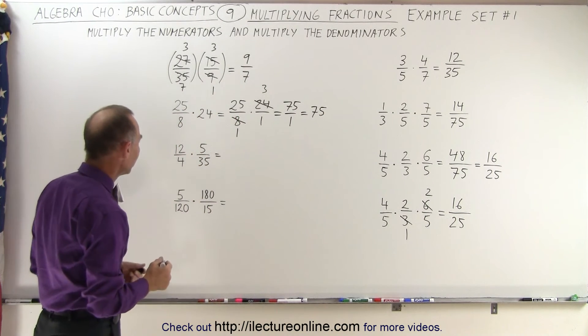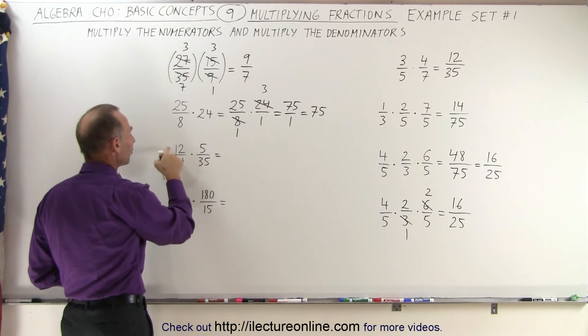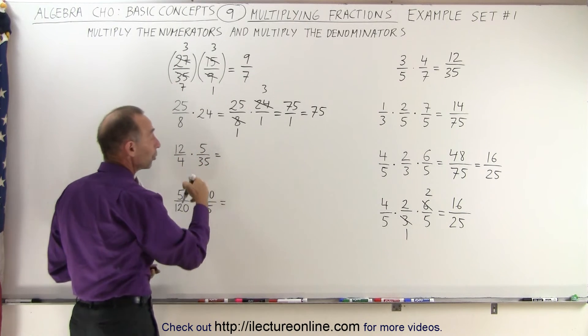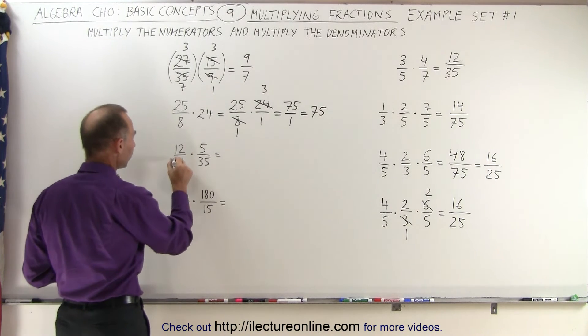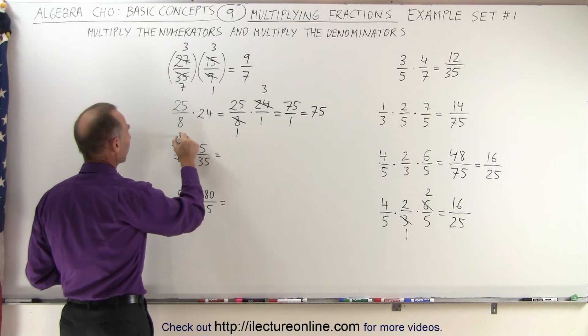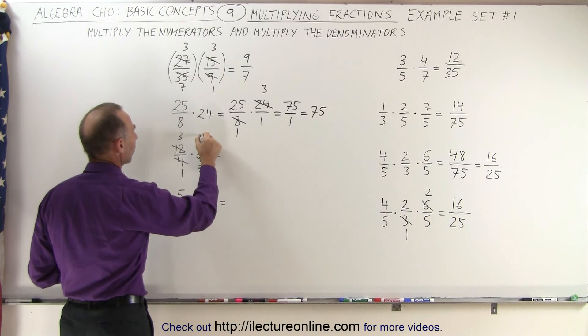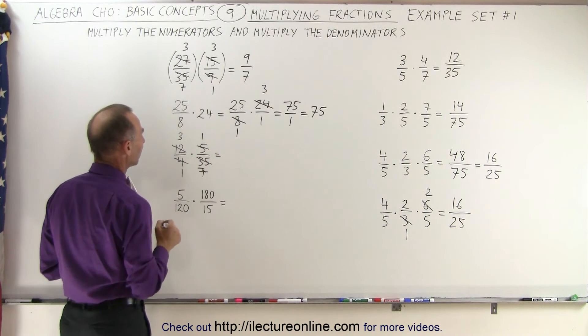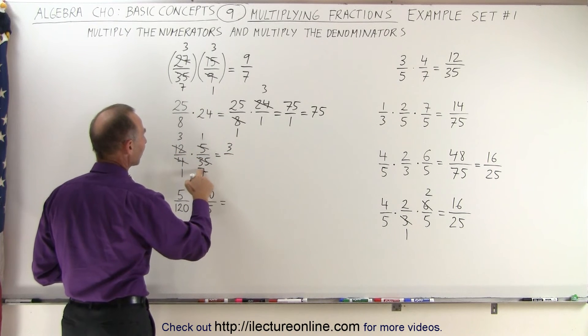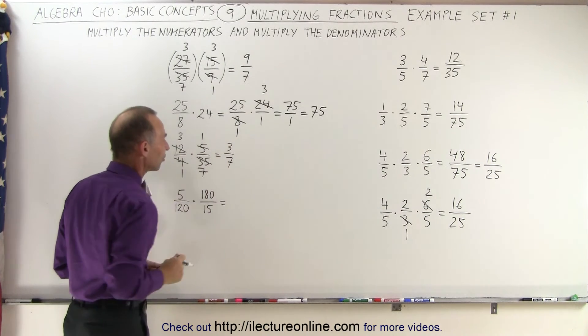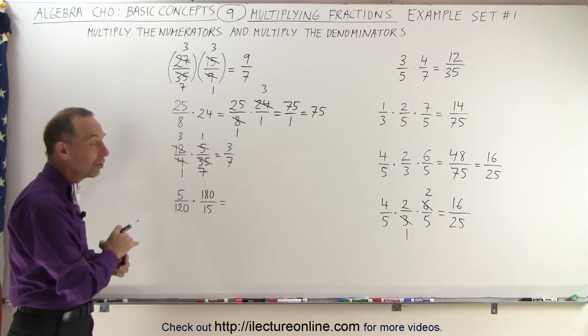On the next exercise we see a 4 and a 12, and a 5 and a 35. 4 and 12 are both divisible by 4, and 5 and 35 are both divisible by 5. So we can simplify before we multiply them together. 4 divided by 4 is 1, 12 divided by 4 is 3, 35 divided by 5 is 7, and 5 divided by 5 is 1. Now we have 3 times 1 in the numerator and 1 times 7 in the denominator. So the final answer is 3 divided by 7. You can see these are much easier and faster to do when you simplify things first.